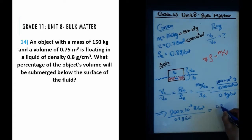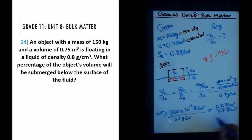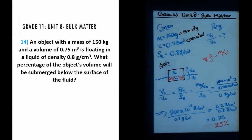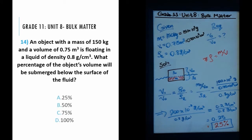So we have 200 × 10⁻³ grams per centimeter cubed divided by 0.8 grams per centimeter cubed. This simplifies to 0.2 divided by 0.8, giving a value of 0.25. To convert that into a percentage, multiply by 100 to get 25%.